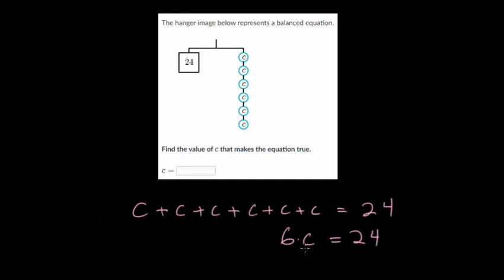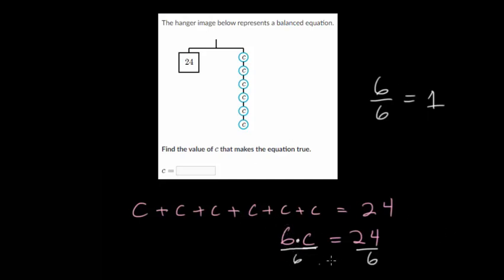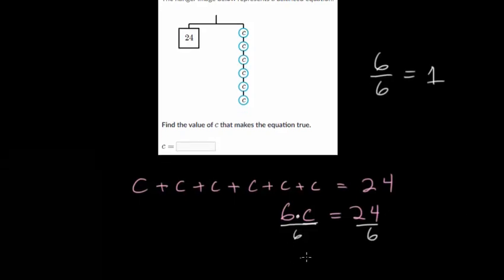To isolate c we need to cancel the multiplication by 6. The opposite of multiplying is dividing, so we divide both sides by 6. Six divided by 6 is 1 — something divided by itself is always 1. Think of it this way: if you have six baseballs split equally among six people, everyone gets one. So the left side becomes 1c, or just c, and the right side is 24 divided by 6, which is 4.